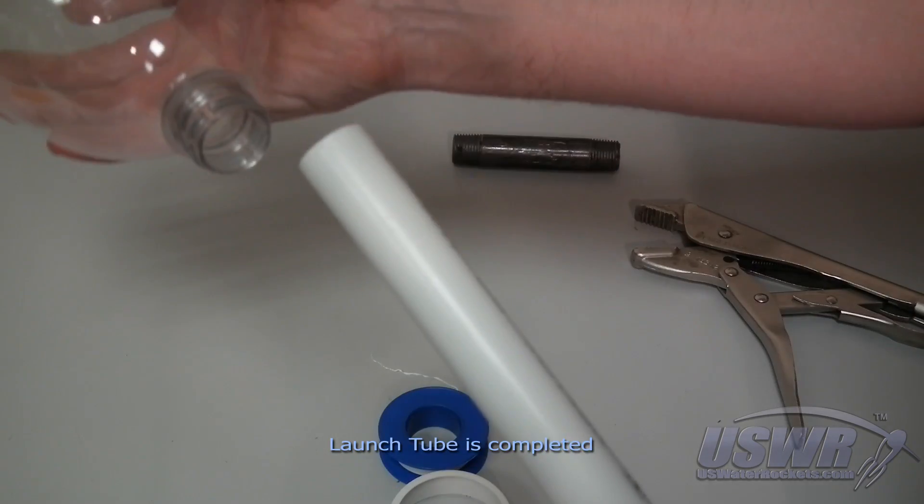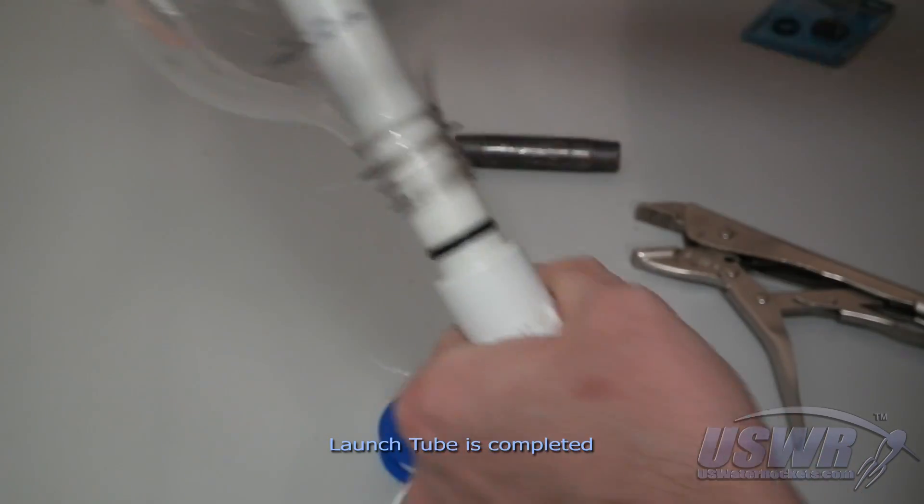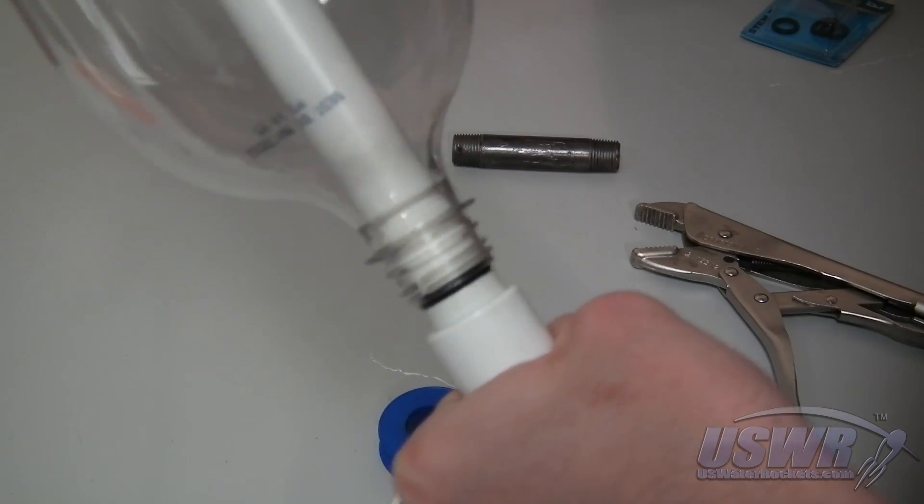Slide a bottle on to test the completed launch tube. Your 22 millimeter o-ring seal launch tube is now complete.